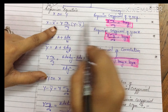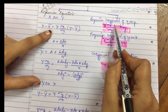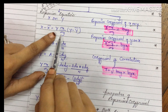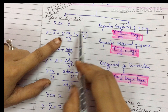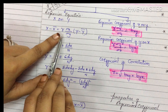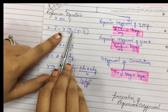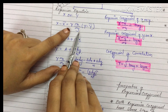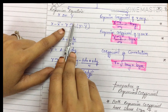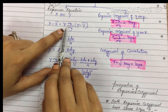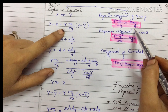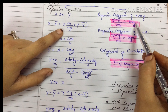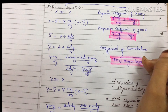Here, the coefficient of correlation formula uses standard deviation of x divided by standard deviation of y, which is nothing but b of x on y.